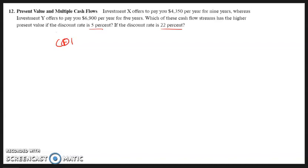So for C01, let's just start with the CF. F0 is 0, so C01 is 4,350, and F01, this is X, is 9 for nine years.